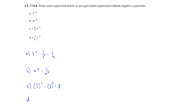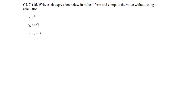For part D, we have the fraction 3 over 5x raised to the negative 1. The reciprocal is 5x divided by 3 raised to the positive 1, which simplifies to 5x divided by 3.